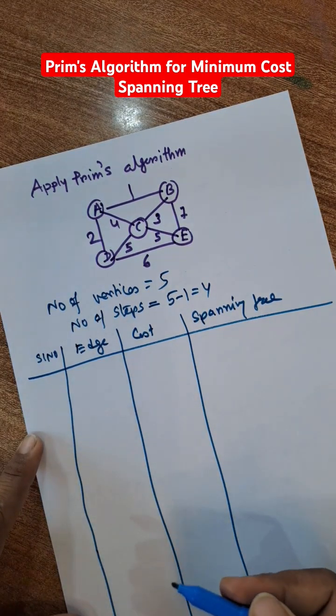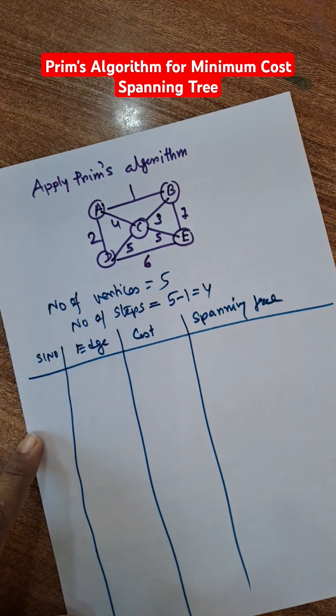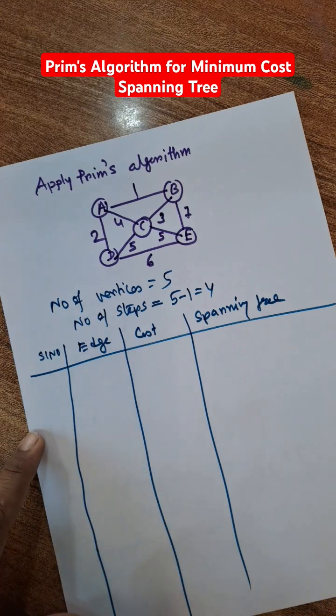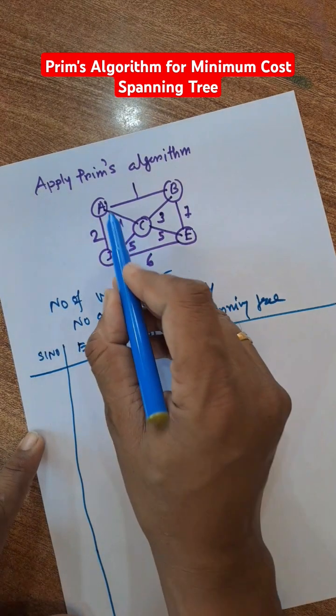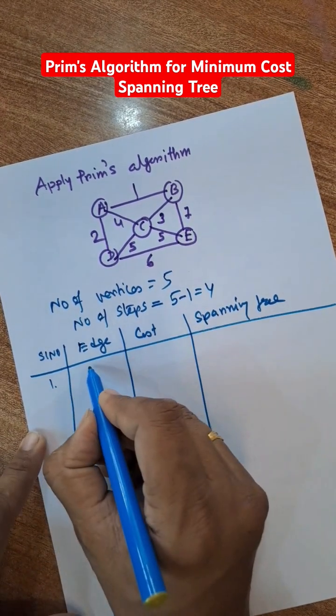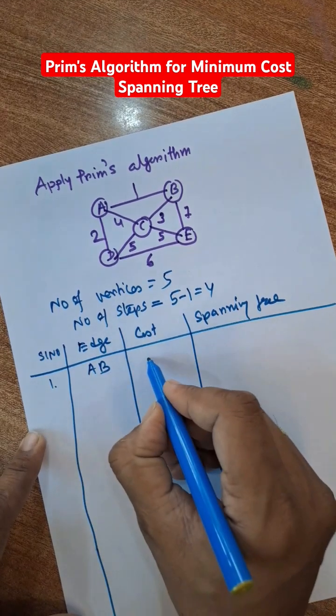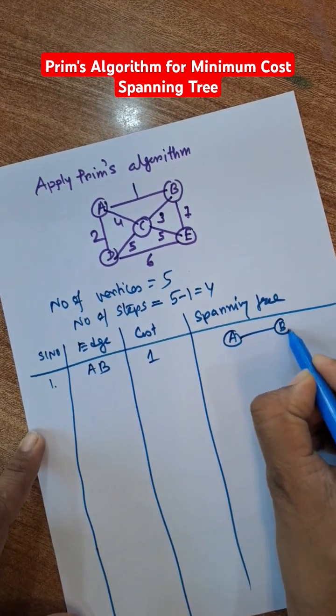First of all, we need to find the minimum cost from all the edges of the graph. Here the minimum is 1. Serial number 1 is edge AB. So select AB as the first edge.